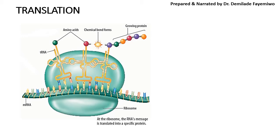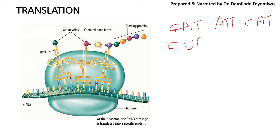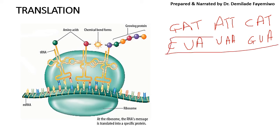Just to cement the understanding — let's say we have a DNA sequence of GAT, ATT, and CAT. What the mRNA would be when RNA polymerase copies this section of the DNA: G would bind to C, A would bind to U, and T would bind to A; then A binds to U, T binds to A, T binds to A; and then G binds, U binds to A, and A binds to U. This section of mRNA is now the messenger RNA.